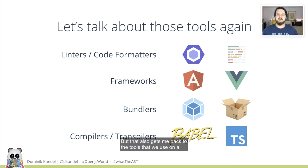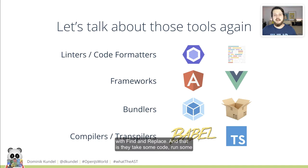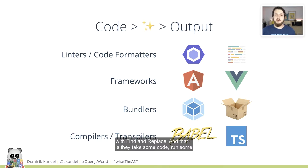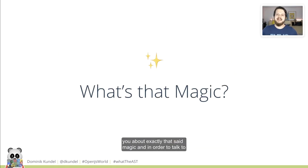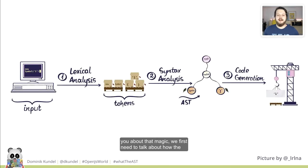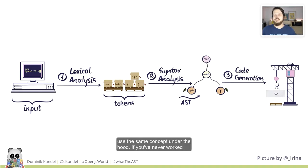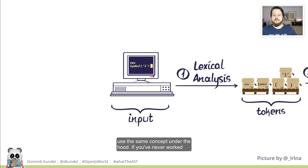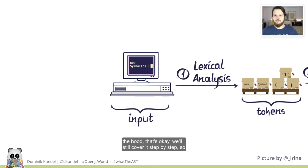That gets me back to the tools we use on a regular basis, because all of these have something in common with find and replace: they take some code, run some magic on it, and produce some output. I want to talk to you about exactly that magic. In order to talk about that magic, we first need to talk about how the compiler works, because effectively all of these tools use the same concept under the hood. If you've never worked with a compiler or never looked at how one works, that's OK — we'll still cover it step by step, so you should be able to keep up.